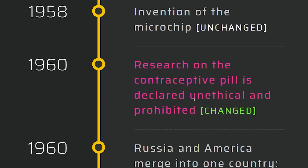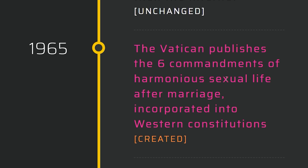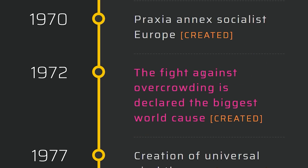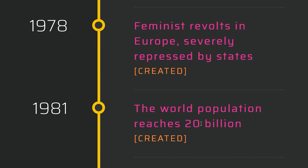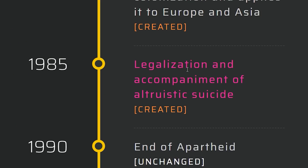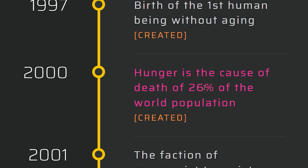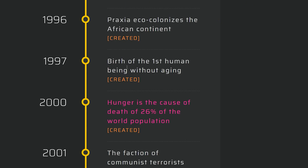Research has stopped. The Vatican publishes some things — the Vatican from India, I'm assuming. The fight against overcrowding has been declared the world's biggest threat by 1972. Feminist revolts in Europe. The world's population reaches 20 billion by 1981 — and we're not even at 20 billion in our world. People are starving. So you've stopped aging in '97 but people are still starving. That's unfortunate.